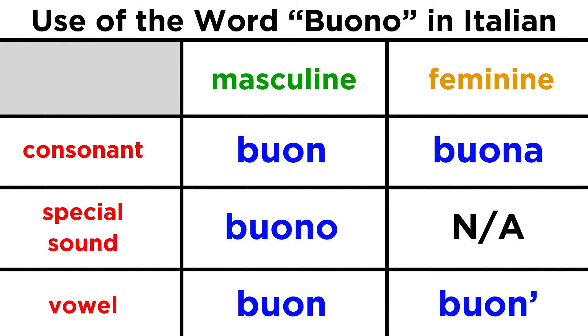If feminine, we add the A, or drop the A and use the apostrophe if before a vowel. Again, this works just like the indefinite articles.